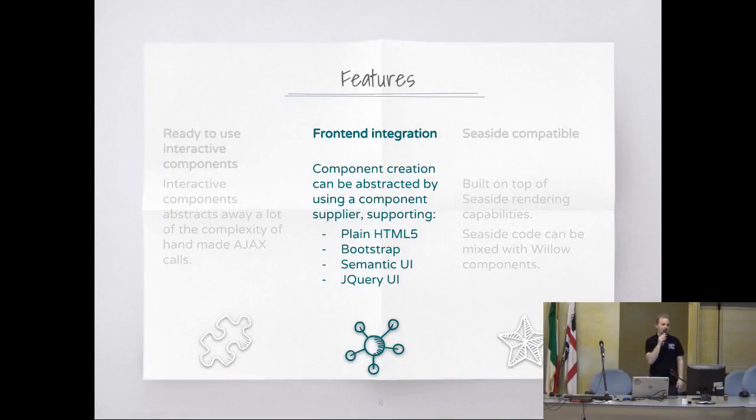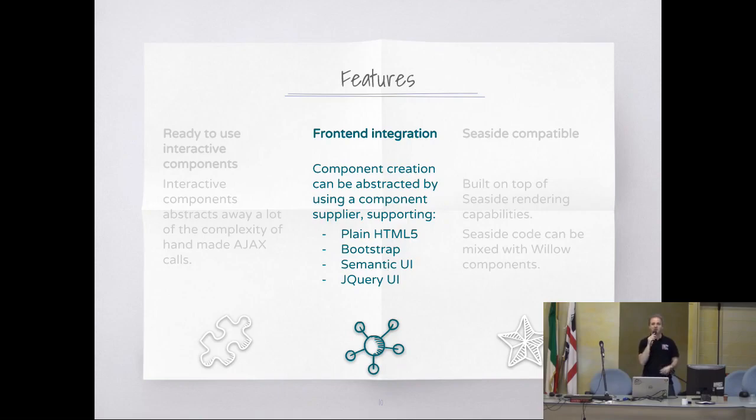It has an abstraction for the front-end framework you are using, because at the beginning we didn't have that and we started using Bootstrap 2. One day we said, let's migrate to Bootstrap 3, and we had to touch everything because the integration was spread over the codebase. So now if you want a Willow component, you ask the component supplier: give me a button.